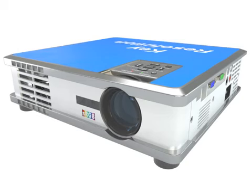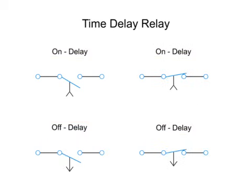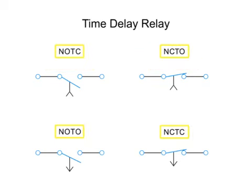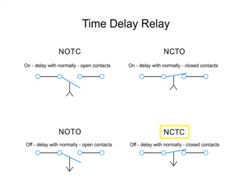Let's look at four basic types of relays. There are two types of relay functions — on-delay and off-delay — each with two types of contacts: normally open and normally closed, represented here by four symbols. NOTC functions as an on-delay with normally open contacts. NCTO operates as an on-delay with normally closed contacts. NOTO functions as an off-delay with normally open contacts. And NCTC operates as an off-delay with normally closed contacts.